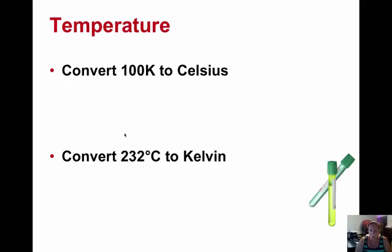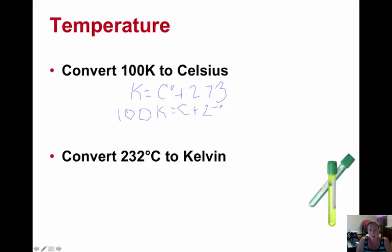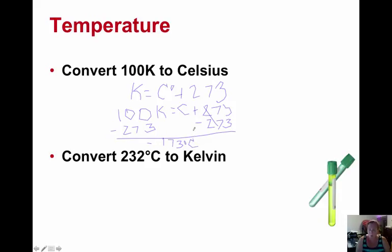Let's practice a couple. We're going to convert 100 Kelvin into Celsius. First write your formula: 100 Kelvin equals Celsius plus 273. Subtract 273 from each side, and we get Celsius equals negative 173 degrees. So some simple rearranging of math.